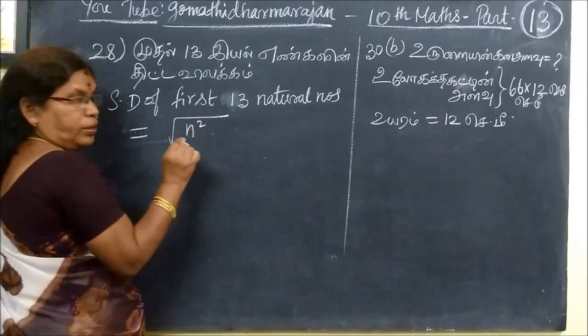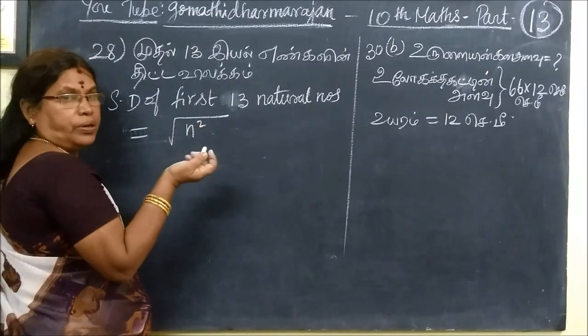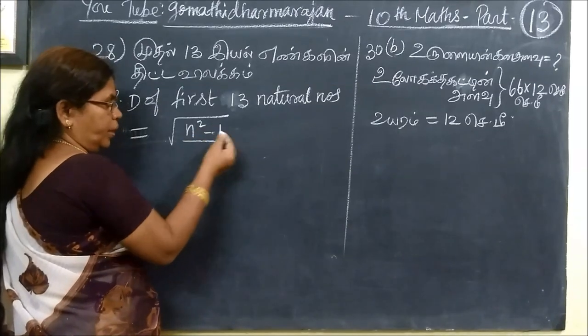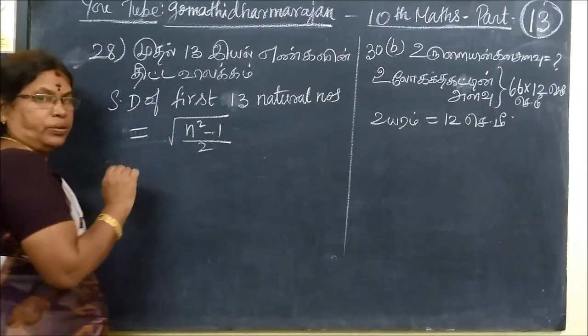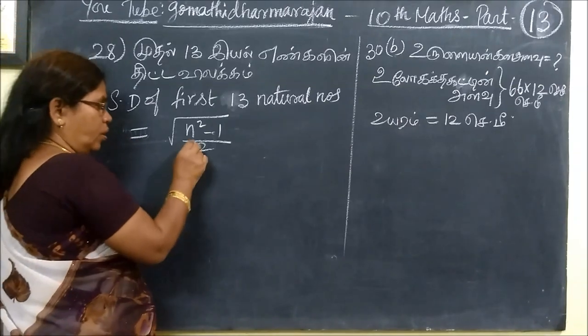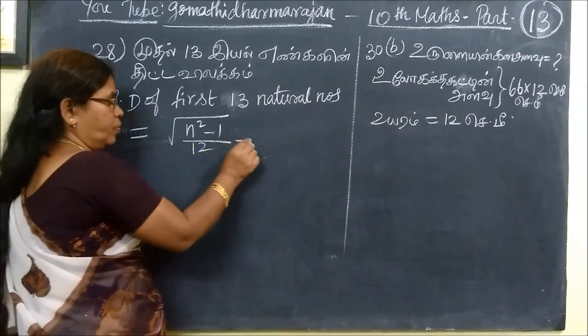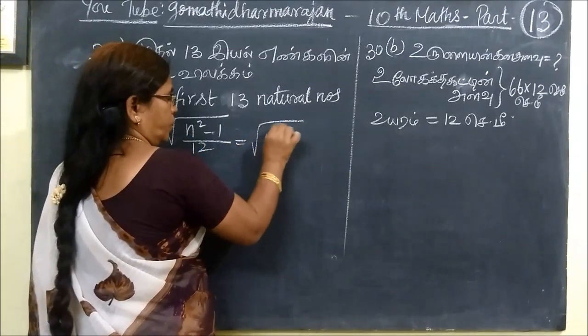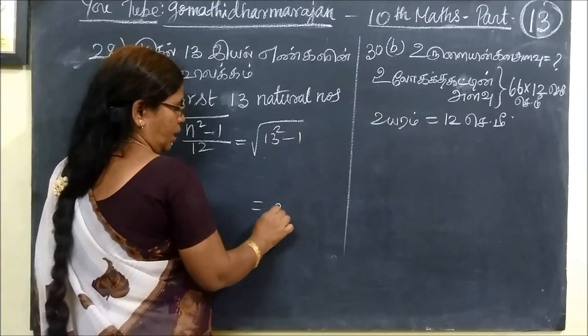The formula is n squared minus 1 divided by 12. So root of 13 squared minus 1 divided by 12, which equals root of 13 by 12. The answer is root of 13 by 12.